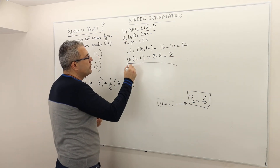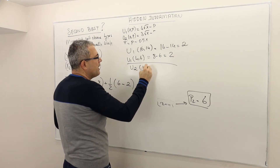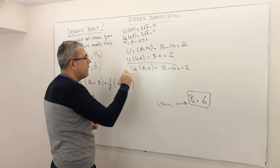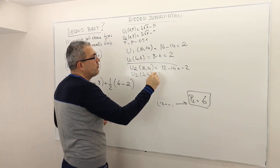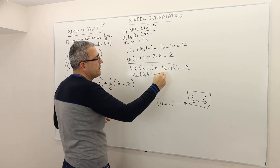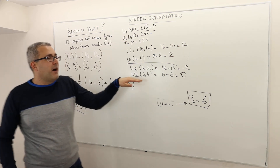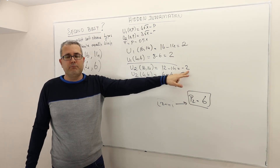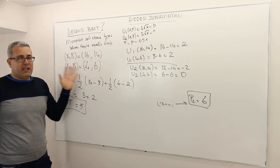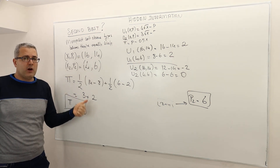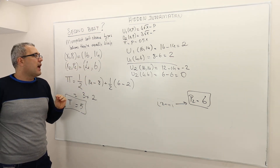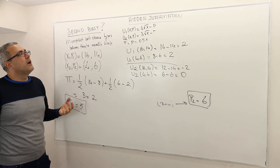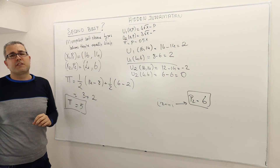For type 2: if he buys package 1, utility is 3√16 minus 14 equals 12 minus 14 equals minus 2 — he definitely doesn't want that. If he buys his own package 2, utility is 3√4 minus 6 equals 6 minus 6 equals 0. So buying package 2 is at least as good as not buying, and strictly better than package 1. Given these two packages, both type 1 and type 2 buy their intended packages, and the monopolist achieves the highest possible profit under hidden information.